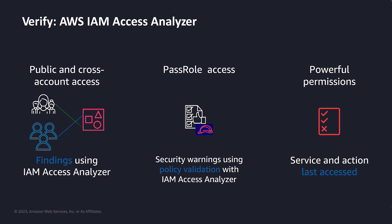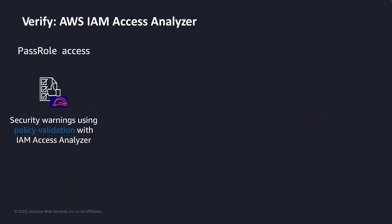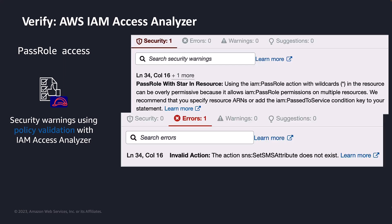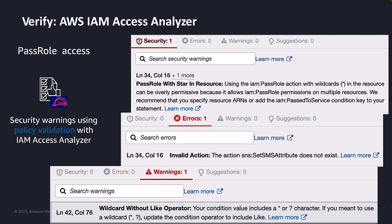This allows you to identify unintended access from outside of your AWS organization as well as unintended cross-account access. AWS IAM Access Analyzer Policy Validation feature guides you to author and to validate your existing policies based on time-tested AWS best practices. Over 100 policy checks enable you to improve your security posture and simplify your policy management at scale with concrete recommendations around security, syntax errors, missing actions, invalid constructs, invalid users, and more.